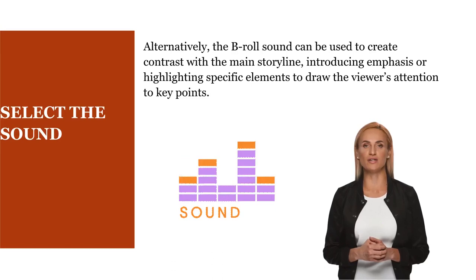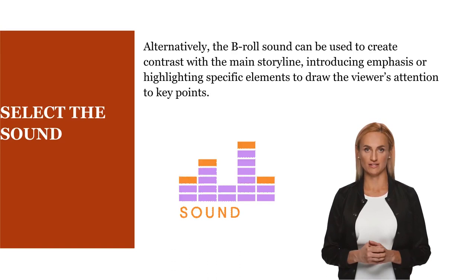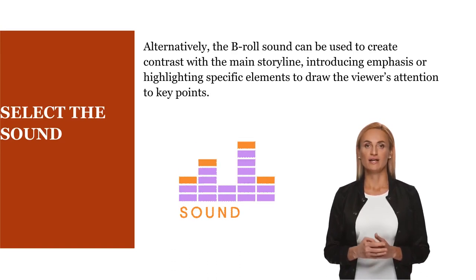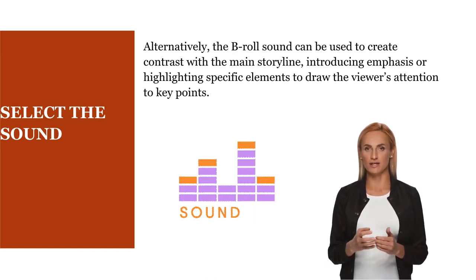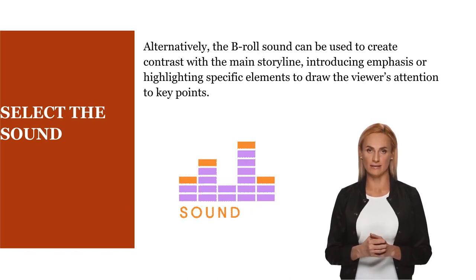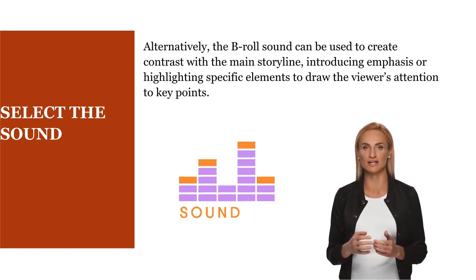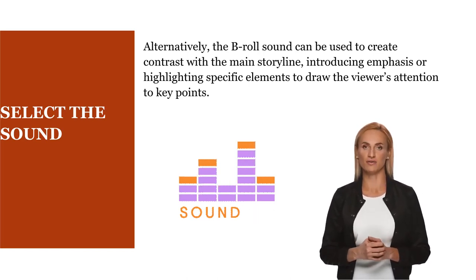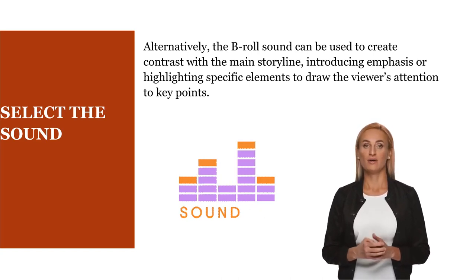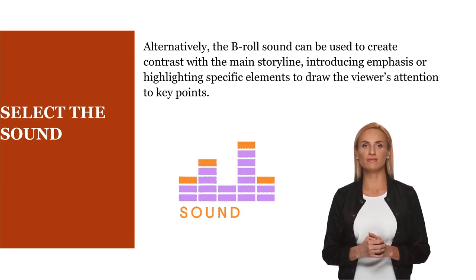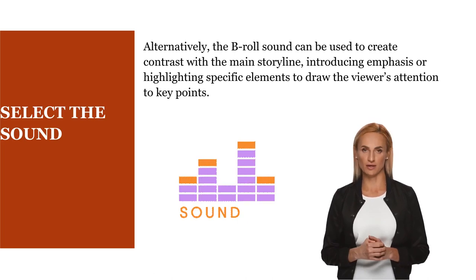Alternatively, the B-Roll sound can be used to create contrast with the main storyline, introducing emphasis or highlighting specific elements in order to draw the viewers' attention to key points. This can be achieved, for example, by changing the voice of the narrator or introducing new characters to the story. You can even decide to make your B-Roll stand out by accompanying it with a different musical piece or a distinctive soundscape or juxtaposing ambient noise.